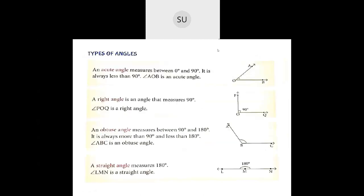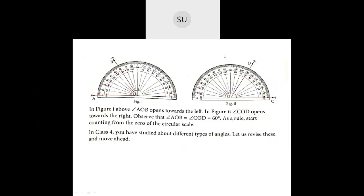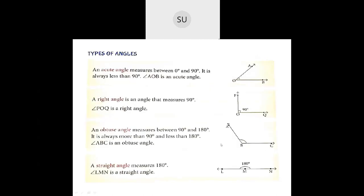Now the different types of angles. You have an acute angle — an angle which measures greater than 0 degrees but less than 90 degrees is called an acute angle.